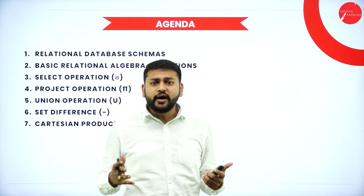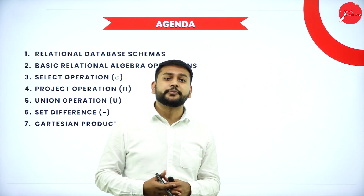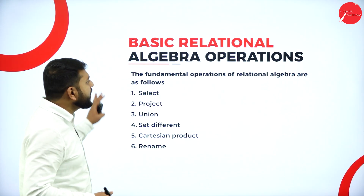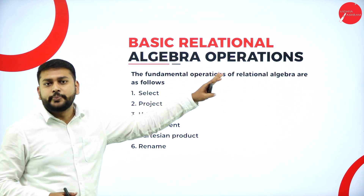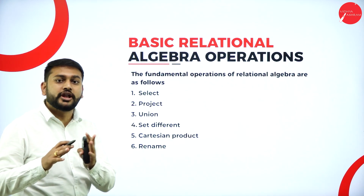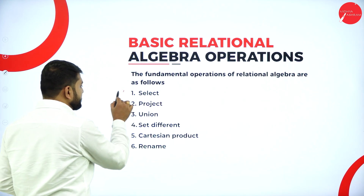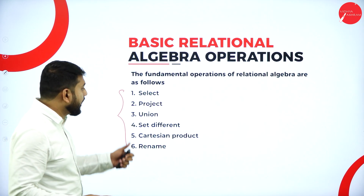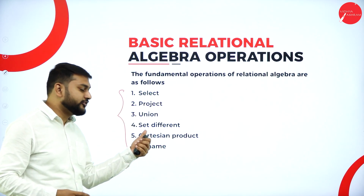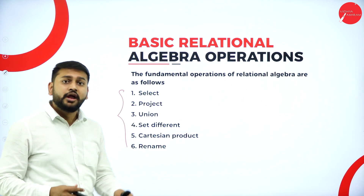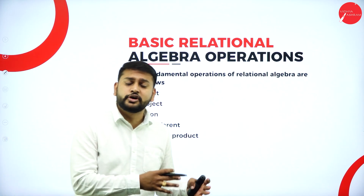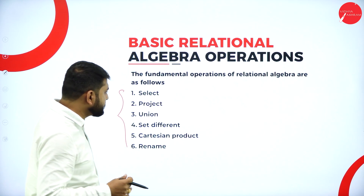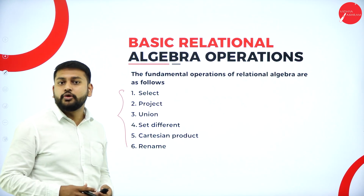So what exactly is this relational algebraic operations? Let's understand that one by one. Whenever I say relational algebra operations, the first thing that should come to your mind is these six operations: select, project, union, set difference, Cartesian product, and rename. And also there are other different operations like joins. Let's discuss these operations one by one.